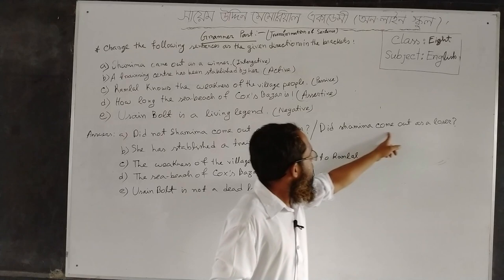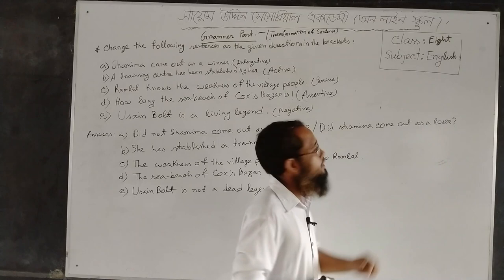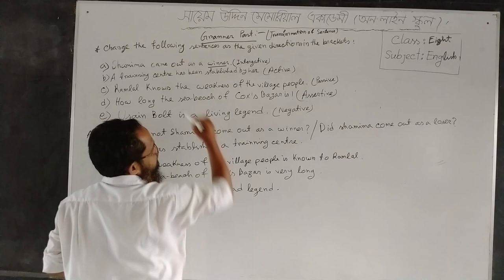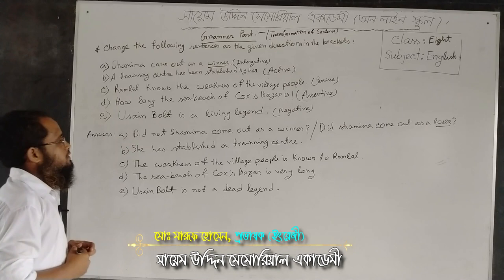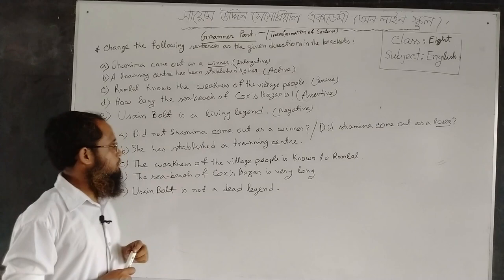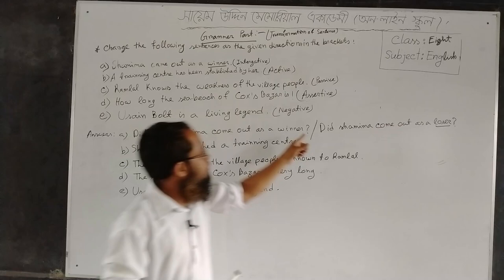Did Shamima come out as a loser? Here we use the opposite word or antonym of the word 'winner' — winner's antonym is 'loser'. So you can solve this problem according to two types: you can make it as a negative interrogative sentence or an interrogative sentence.